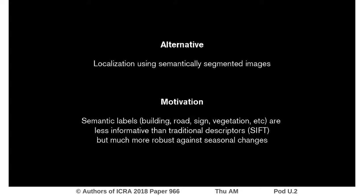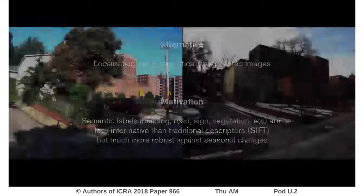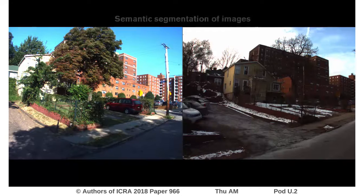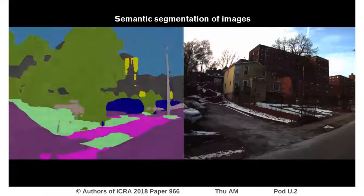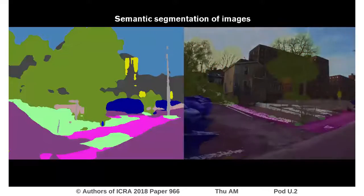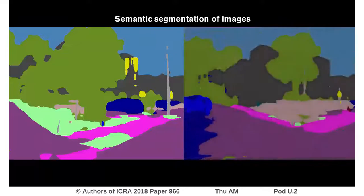We propose, instead of using descriptors based on visual appearance, to use semantic labels as descriptors. We claim that for stationary objects, the semantic label should stay constant over time, and the problem of assigning the correct label is now moved to a machine learning algorithm that can learn to cope with changing conditions by training on a wide variety of examples.